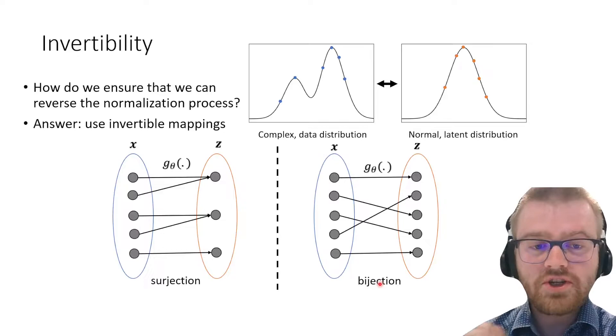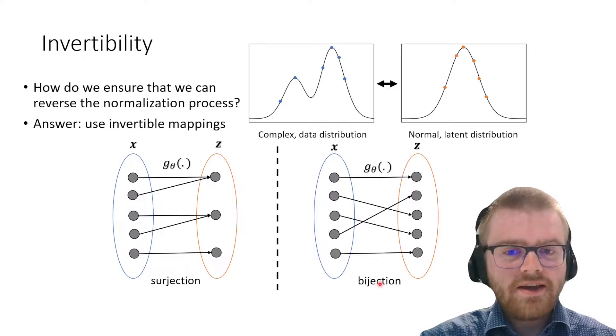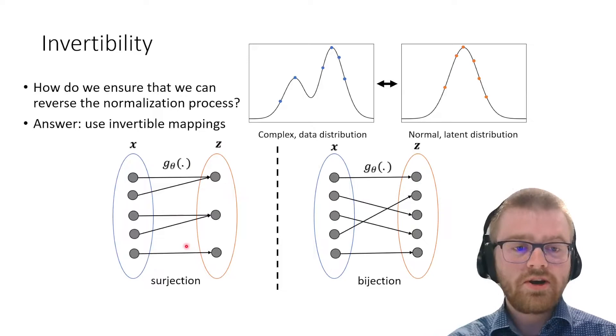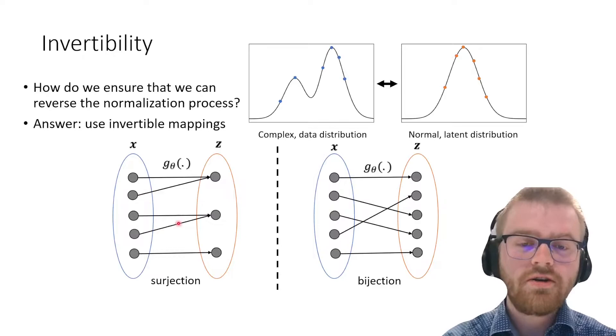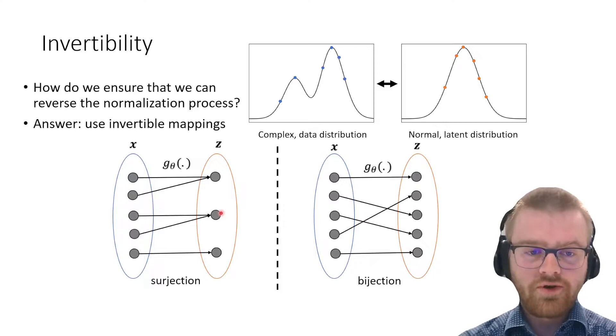An invertible mapping is different from the surjection we're used to, for example in the encoder of a VAE. In a VAE, we have a large x space and the z space is smaller, which by definition means multiple points in x space map to the same point in z space. This does not work for normalizing flows.